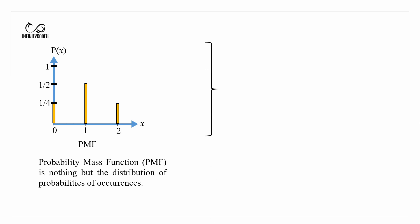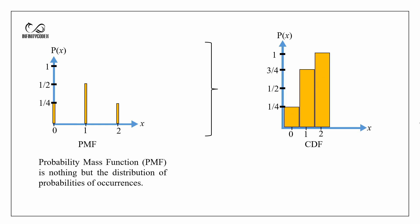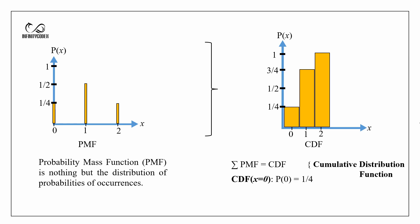If we do the summation of the probability mass function then we get the cumulative distribution function. To calculate the cumulative distribution function it is very easy. The cumulative distribution function for the probability of getting heads 0 times is the probability of getting heads 0 times, that is 1/4.